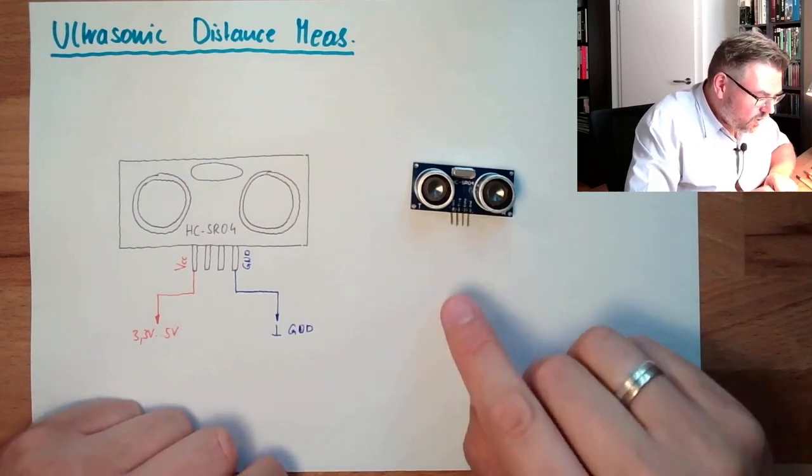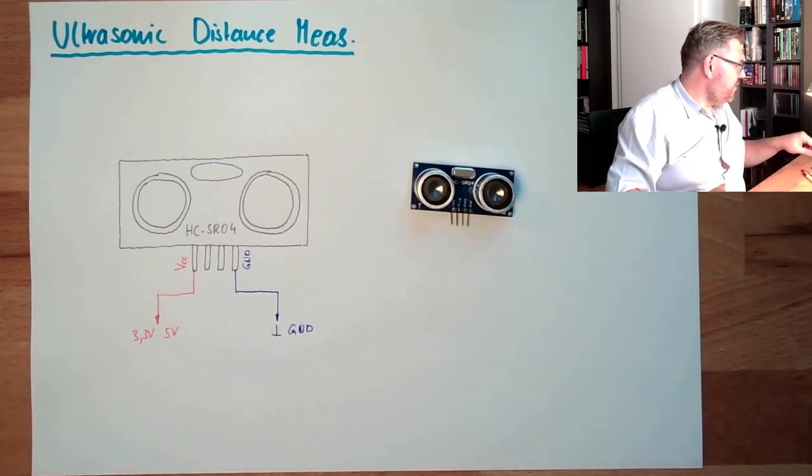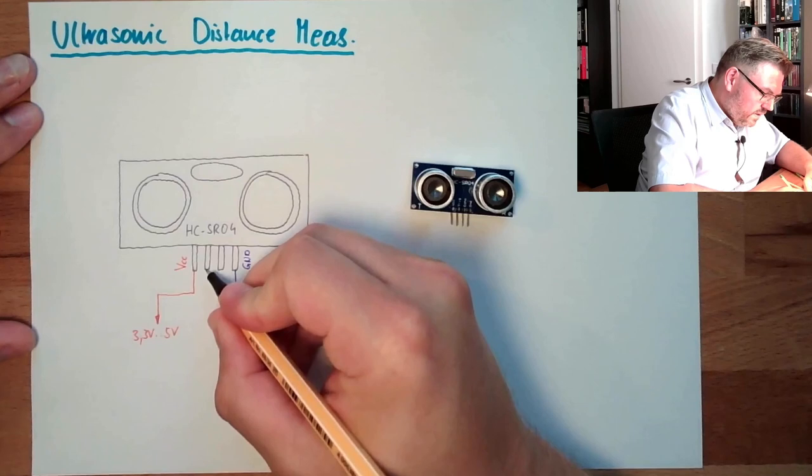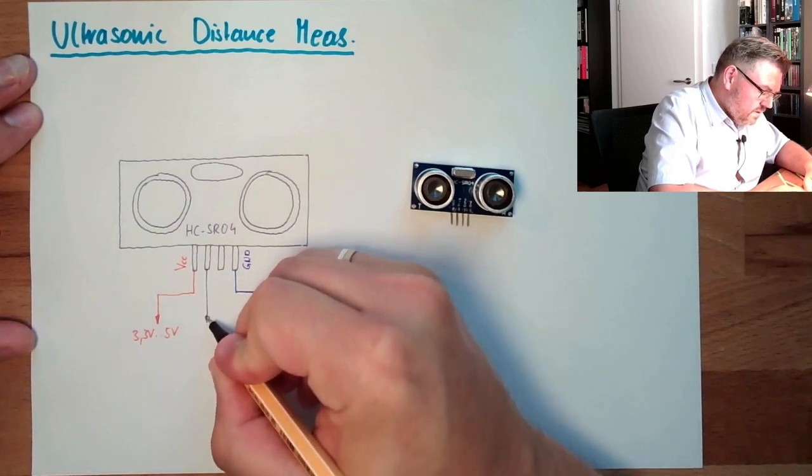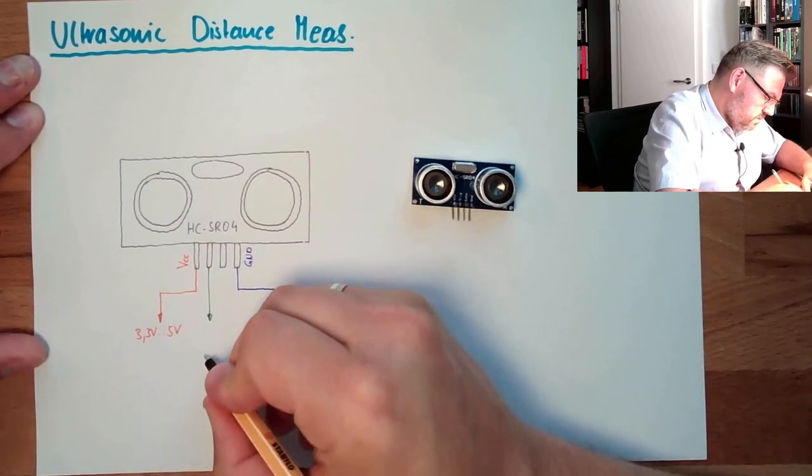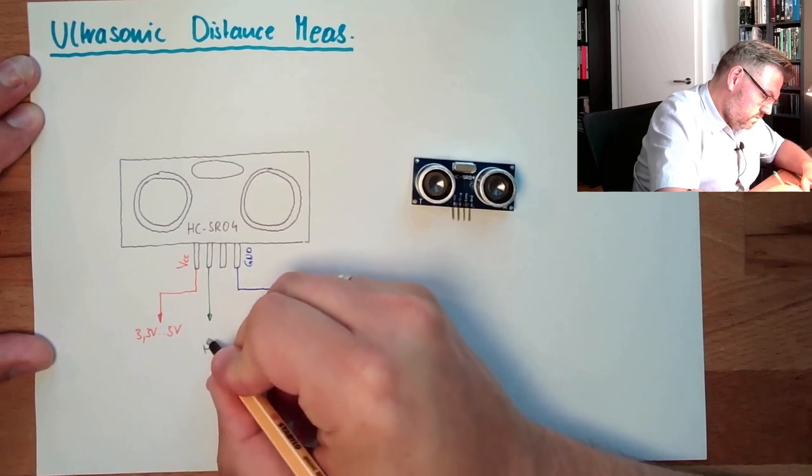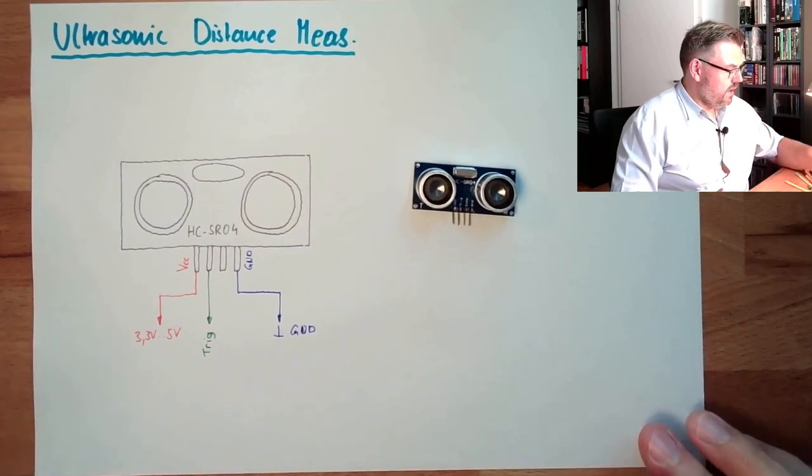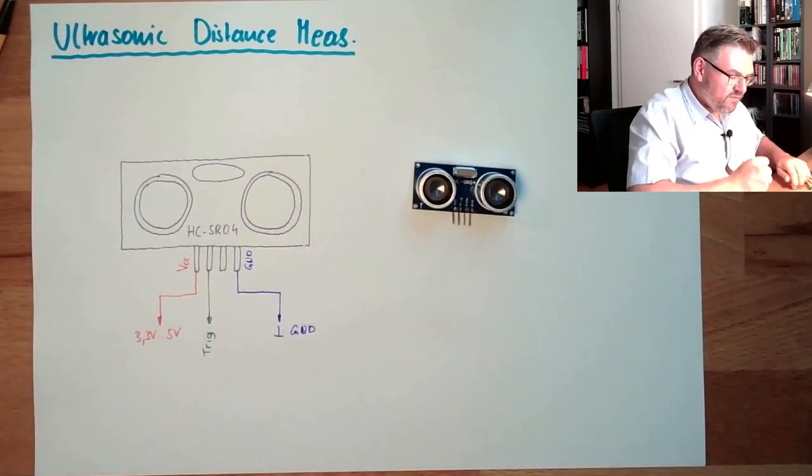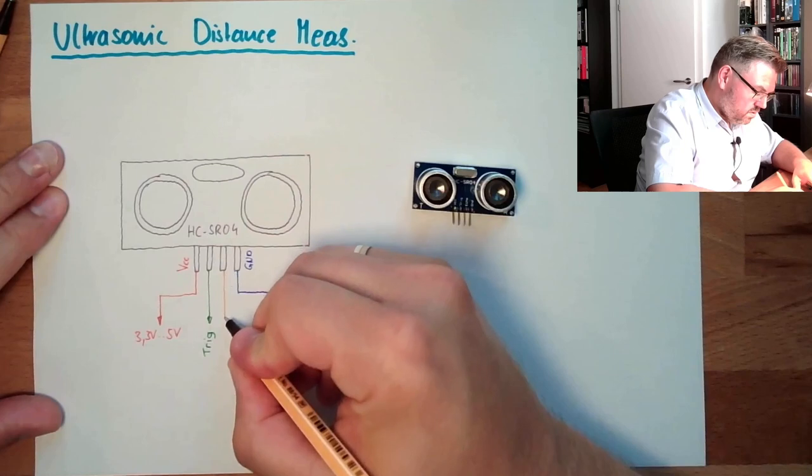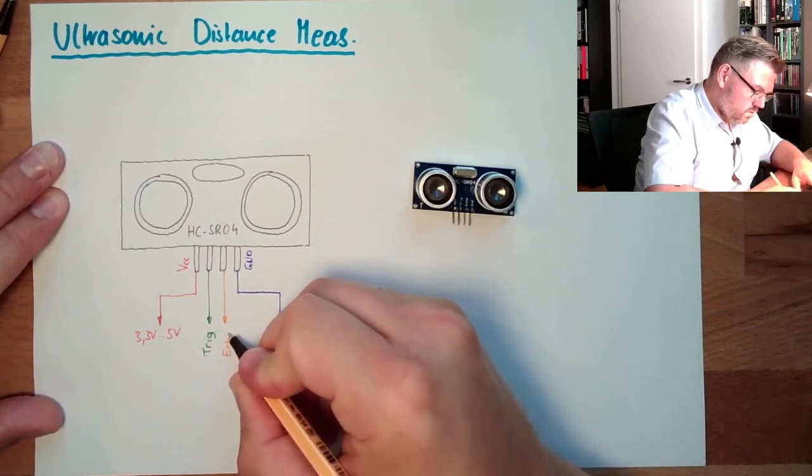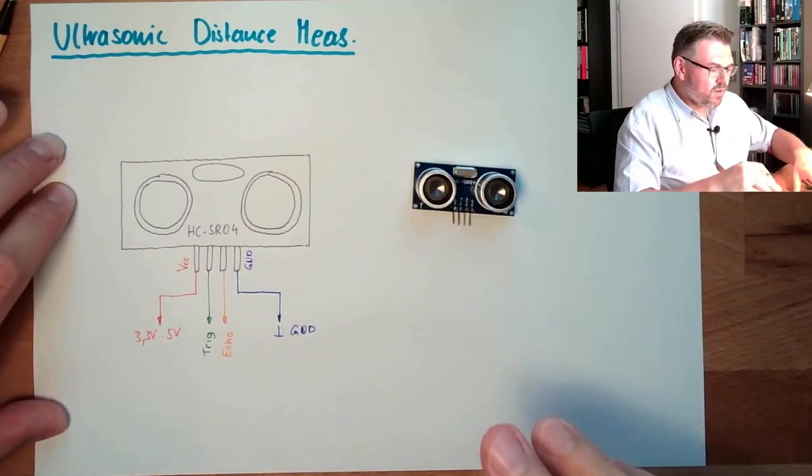And then there are two other things. I'll use the green and orange. There's here, this is called trigger. And here we have echo.